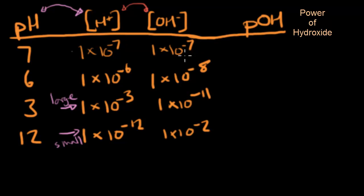So pOH, power of hydroxide. If the hydroxide concentration is 10 to the negative 7th, the pOH is going to be 7. The next one that's 10 to the negative 8, the pOH is going to be 8. For 10 to the negative 11th, pOH is 11. And the last one is a pOH of 2.